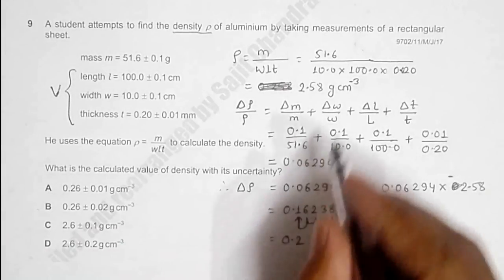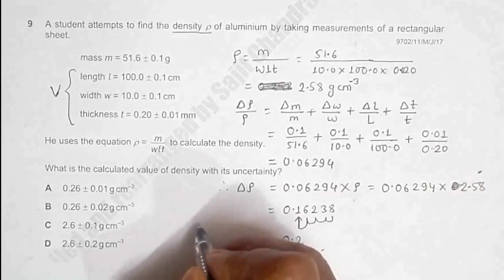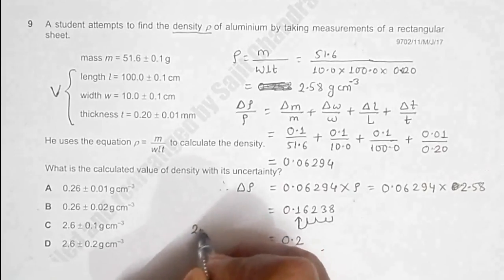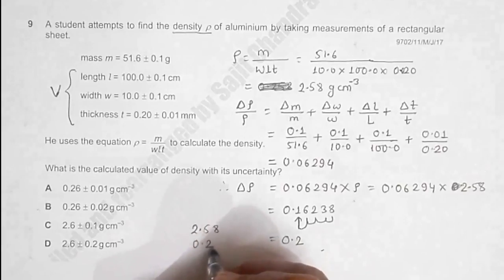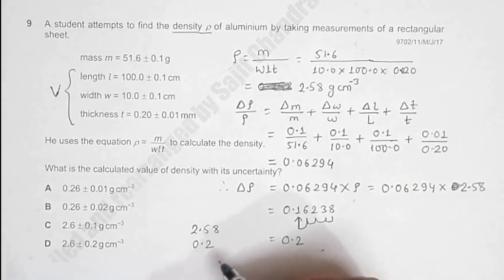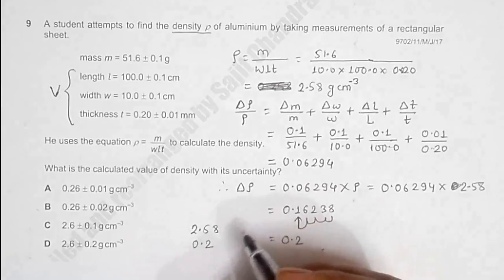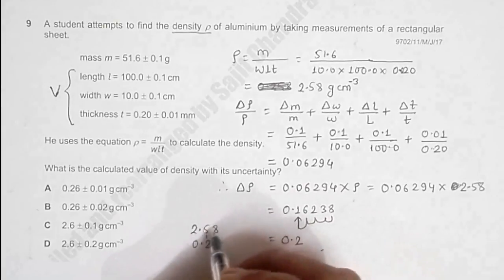have 0.2. Since the error starts from the first digit after the decimal, the quantity should be rounded off here. Since this was 8, when it is rounded